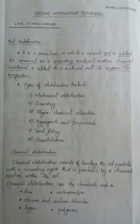So what is chemical stabilization? Chemical stabilization consists of bonding the soil particles with the cementing agent that is produced by a chemical reaction within the soil.